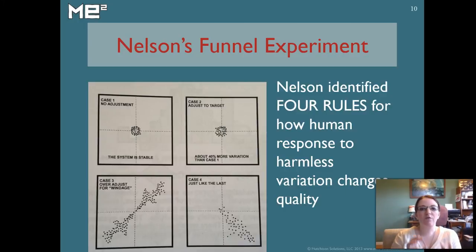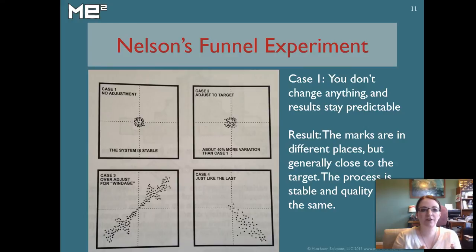Nelson used this to identify four rules for how human beings respond to harmless change and end up hurting quality. There are these four cases. This is from the Quality Council of Indiana's CQIA primer and I'm going to go through each one and explain them to you. In Case 1, the variation just happens. You don't change anything, you just keep dropping those marbles and the results stay pretty much the same. They're pretty close to the target. You can predict that a drop is going to be within this area. That's a stable system. The results are predictable.